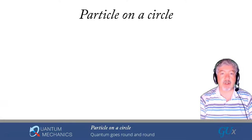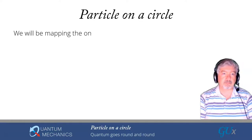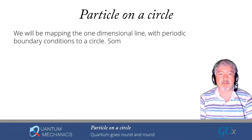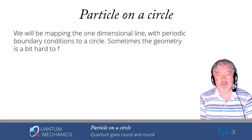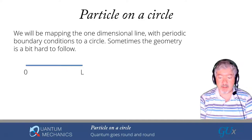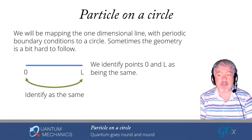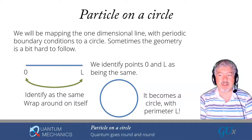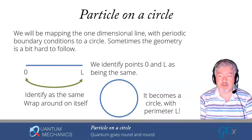Let's get you oriented on how we describe a particle on a circle. We essentially map a one-dimensional line segment with periodic boundary conditions to a circle. Here's our line — it extends from 0 to L. If we identify the endpoints so that the point L is the same as the point 0, that is the same as wrapping that line around itself into a circle. We say it has periodic boundary conditions so that the point at L is identical to the point at 0, and we've mapped the problem onto a circle.